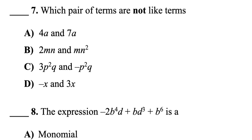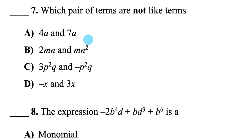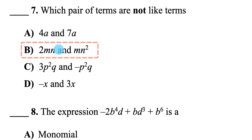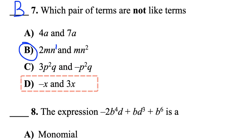Question 7: This one we can't verify with a calculator — we just have to know what like terms are. The question asks which pair of terms are not like terms. Like terms have the exact same variables with the exact same exponents. In part B, both terms have m and n variables but the exponents on the n's are different — one is n to the 1, the other n to the 2 — so those are not like terms. Answer is B.